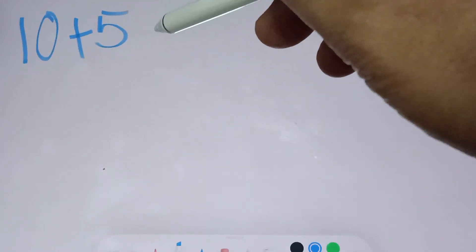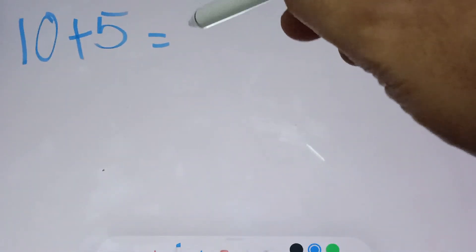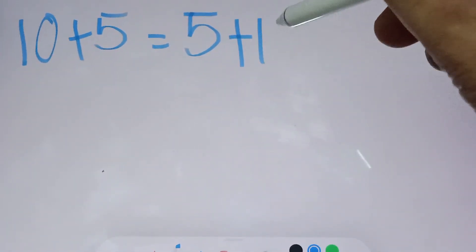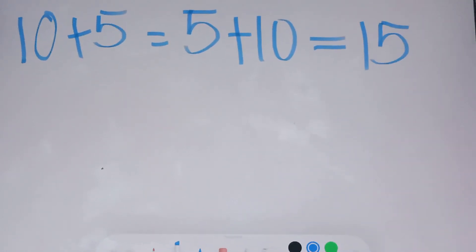So let's have two more examples under commutative property of addition and commutative property of multiplication. For example, if you have 10 plus 5, this will be equal to 5 plus 10. And the answer is equal to 15.